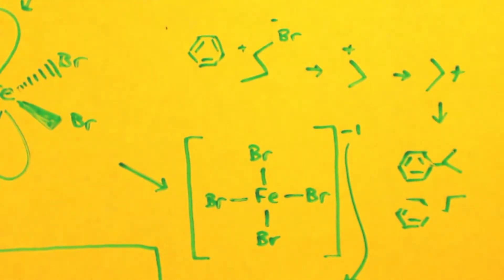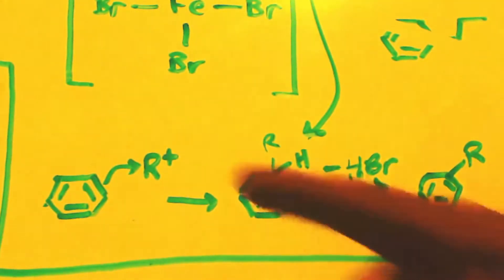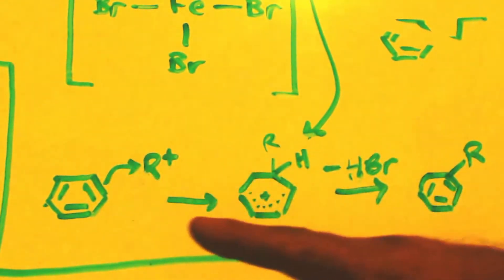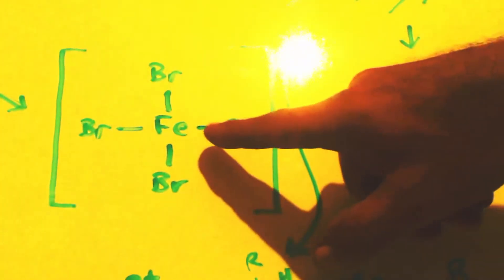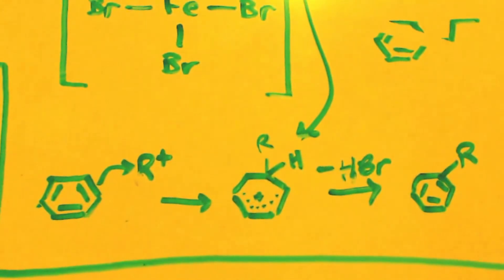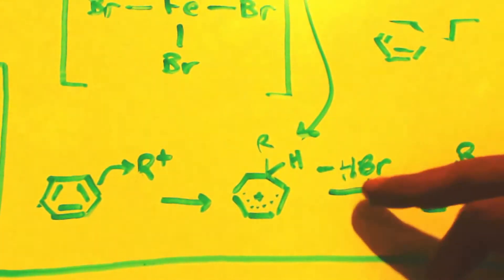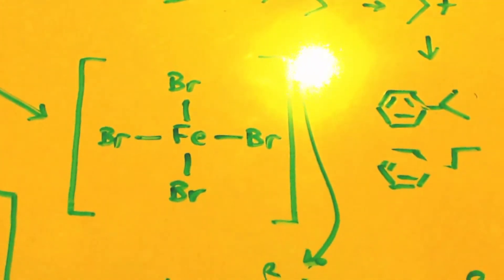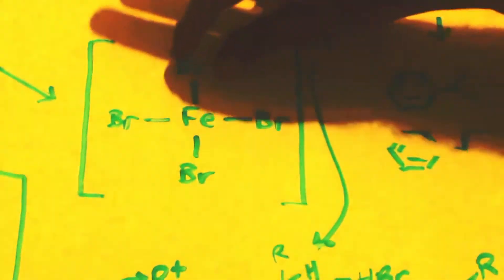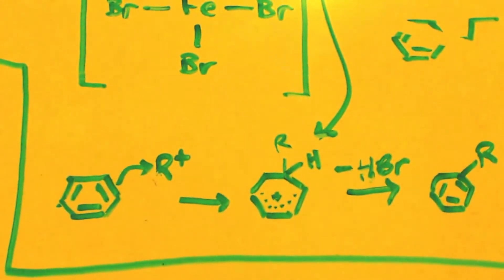So that's one problem with this reaction. Let's finish the mechanism. The positive carbocation attacks, well actually benzene attacks the carbocation. Now you have a hydrogen and carbocation, a lot of positivity. So remember you have that iron tetrabromide that you made, and it's negative, so it comes and grabs this proton off. And now you have your product. In the process you make HBr, because you took off a proton and one of these bromides come off.